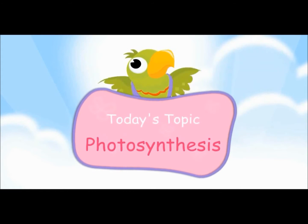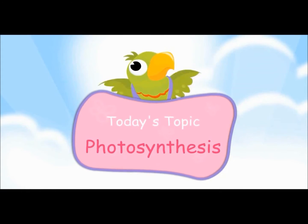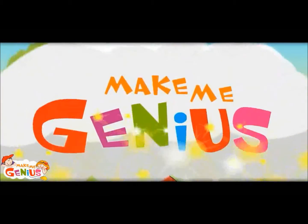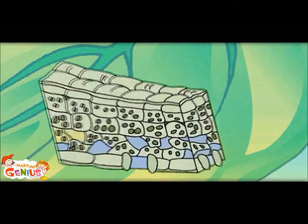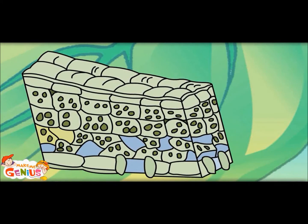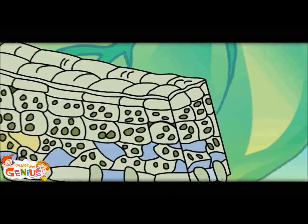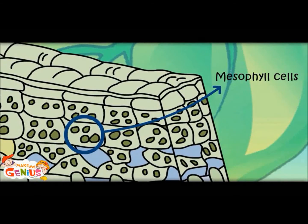Today's topic: photosynthesis. Let me show you something. This is inside of a leaf. If you see a leaf under a microscope, you would see there are brick-like structures. These are called cells. The cells on the top layer are called mesophyll cells.